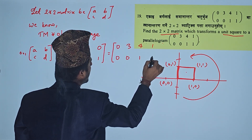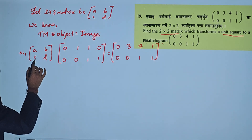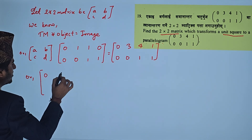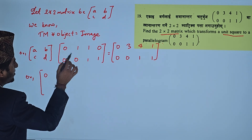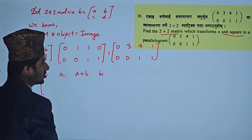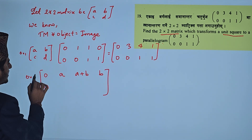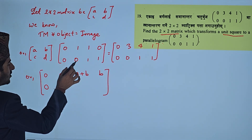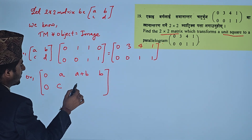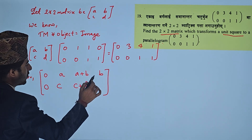The computation gives: A×0 + B×0, A×1 + B×0 = A, A×1 + B×1 = A+B, A×0 = 0, C×1 = C, C×1 + D×0, D×1 = D. So the resulting elements are computed row by row through matrix multiplication.